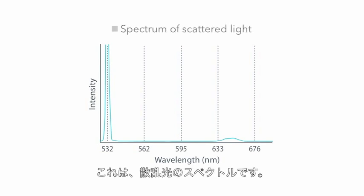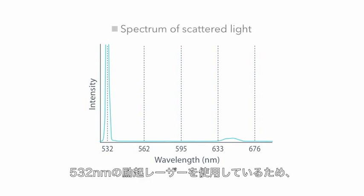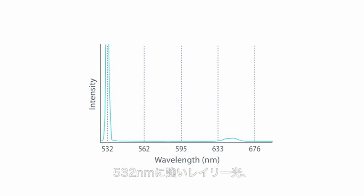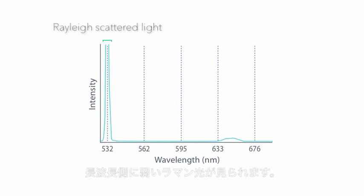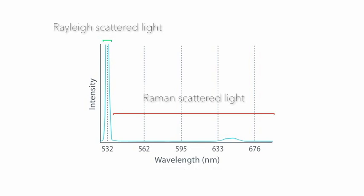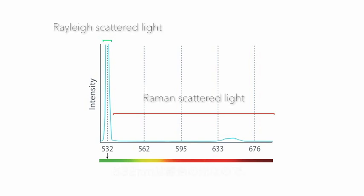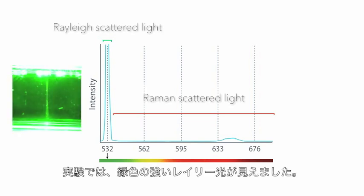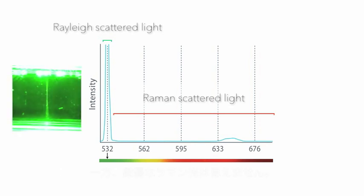This is the spectrum of scattered light from the sample. Because we are using a 532 nanometer excitation wavelength, we can detect both strong Rayleigh scattered light at 532 nanometers and weak Raman scattered light at a longer wavelength. Light at 532 nanometers is visible as green light, therefore at first a strong green light was observed.